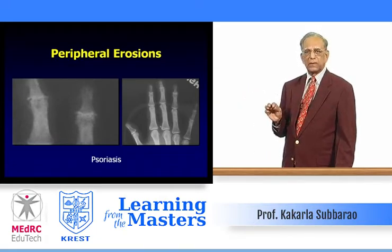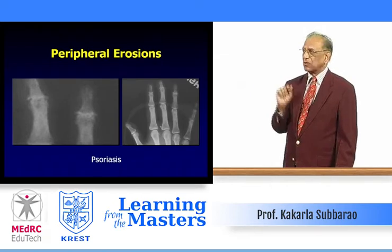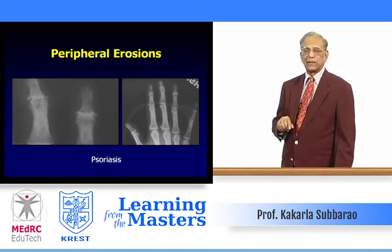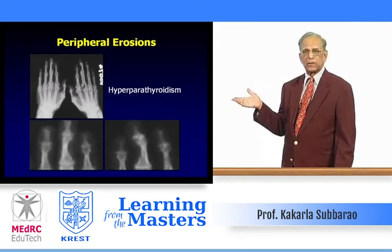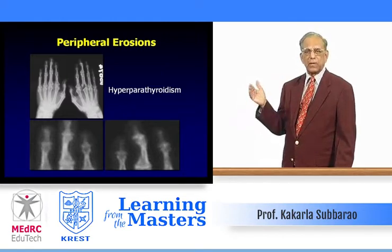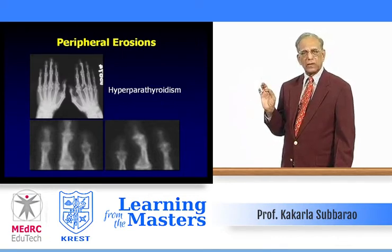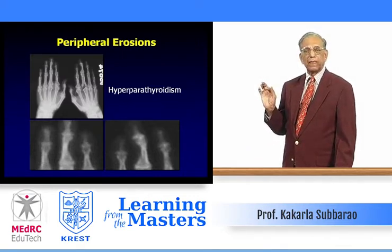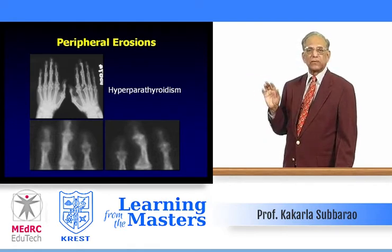Peripheral erosions are classically described as 'mouse ear' and can occur in psoriasis. In hyperparathyroidism, subarticular and subperiosteal bone resorption produces eccentric erosions — particularly resorption of the subperiosteal bone on the radial aspect of the middle phalanx of the index finger.